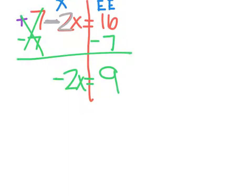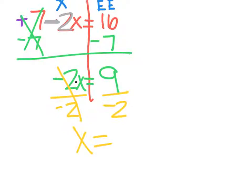So my final step — to get rid of this negative 2: remember if a number and a letter are next to each other, they're being multiplied. The opposite of multiplication is to divide. Whatever I do to one side, I have to do to the other. Negative 2 divided by negative 2 — these are going to cancel. I get x equals — well, 9 divided by negative 2 is going to be a decimal, so we'll leave it in fraction form because fractions are actually better. Let's think about our sign: if the 9 is positive and the 2 is negative, a positive divided by a negative is a negative, so our fraction is negative 9 over 2.